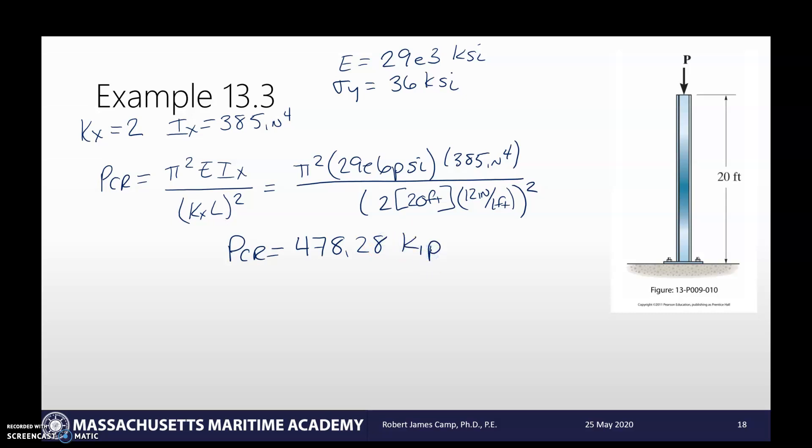So we're going to take all of that gobbledygook and we're going to square that. And so we're going to end up with is Pcrit of 478.28 KIP. Remember KIP is, that's 478,000 pounds because the KIP is just a thousand pounds. So that's our critical. So when we get to a load of 478,000 pounds, it's going to buckle in the X direction. Is that our answer? We don't know. It could be. We've got two other failure modes. It can fail in the Y direction and it can fail by material.